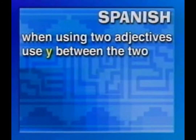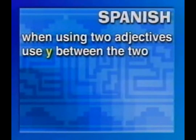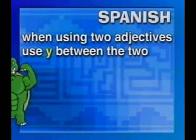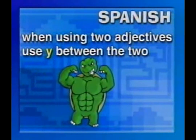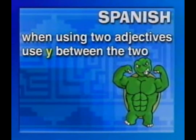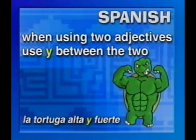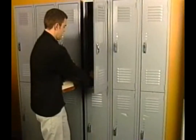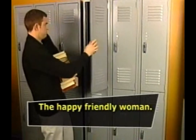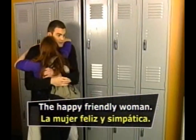Now, in all of our examples we only used one adjective. How do you use two adjectives in Spanish? When using two adjectives, you follow the same rules as with one adjective, but you put a y — that's e in Spanish — between the two words. So if you want to say "the tall strong turtle," you say la tortuga alta y fuerte. And if you want to say "the happy friendly woman," you'd say la mujer feliz y simpática.